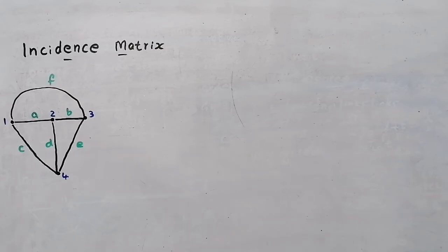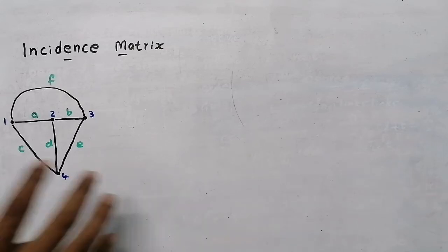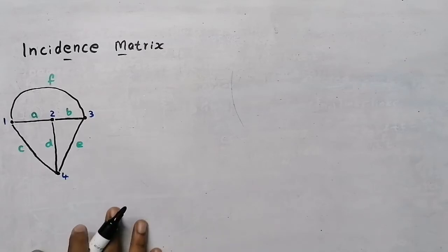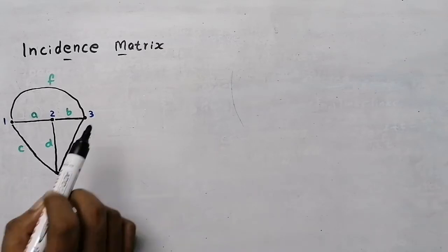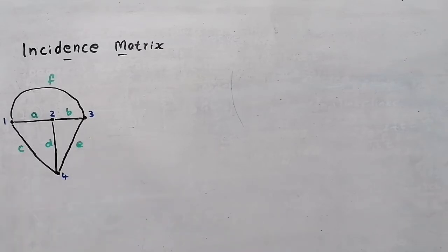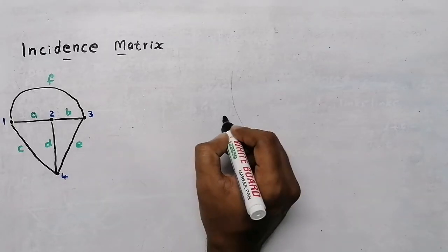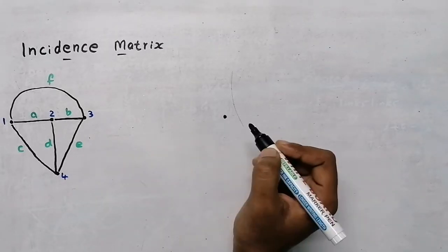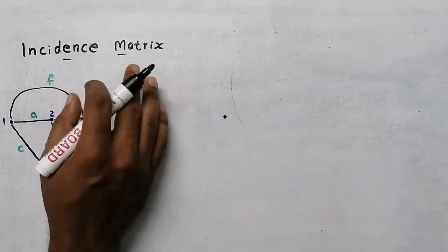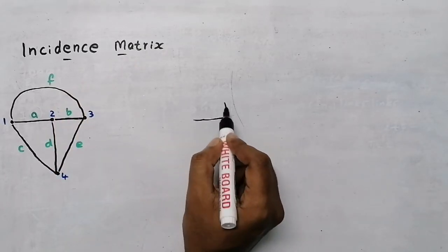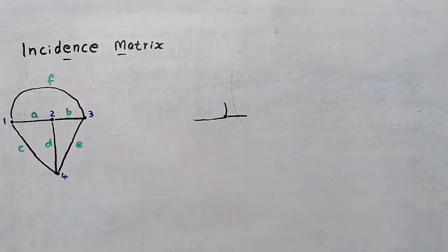In the previous video we discussed how to draw a graph from a network, and we also discussed about graph tree, cotree, and links. In this video we are going to discuss about incidence matrix. We know for a graph there will be a node, and by using incidence matrix we can find the number of elements connected to that node.